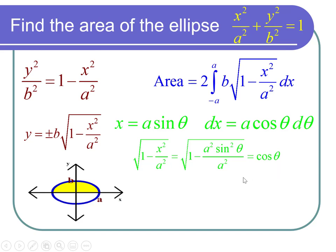Now we can put this all together and the area is equal to twice, and then the dx has an a and we have this b, so it's 2ab times the integral. The square root of 1 minus x squared over a squared was cosine theta, the dx had a cosine theta d theta, so there's my cosine theta d theta and that a came outside.